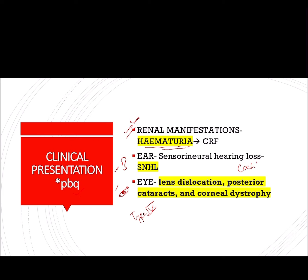In the ear, specifically in the cochlea of the inner ear, type 4 collagen is present. When it is defective, it causes sensorineural hearing loss, because the organ of Corti sits on a basement membrane made of type 4 collagen. In the eye, type 4 collagen is also present, and manifestations can include lens dislocation, anterior lenticonus, posterior cataracts, and corneal dystrophy. You should remember that three systems are affected in Alport syndrome: kidney, eye, and ear.